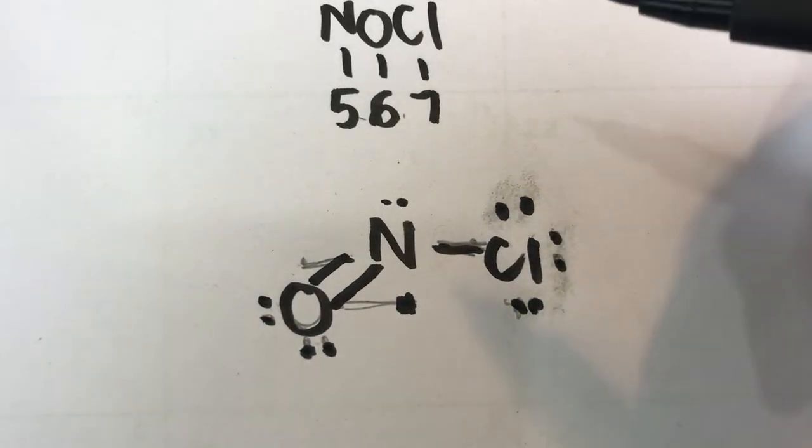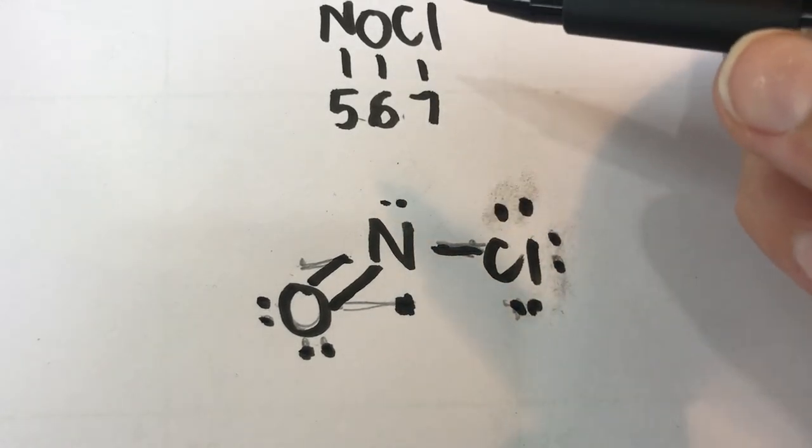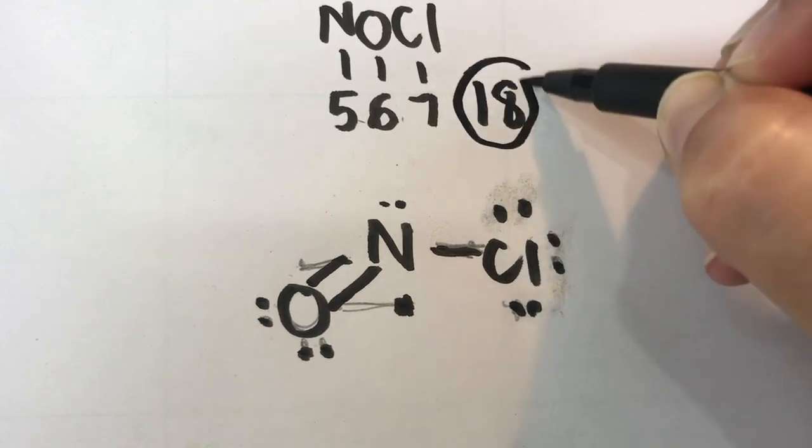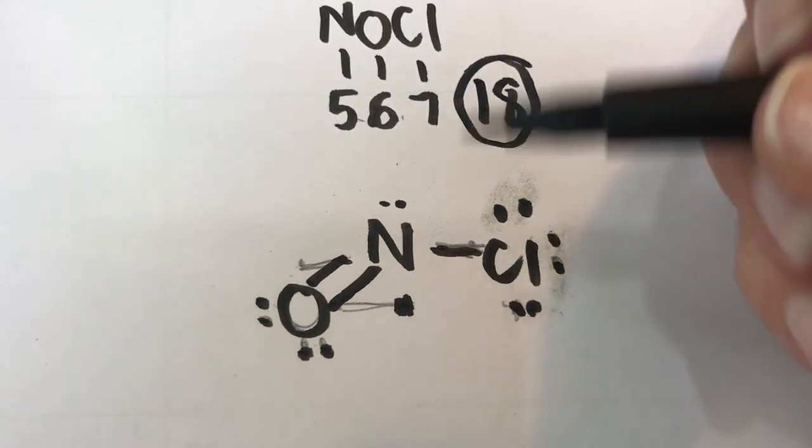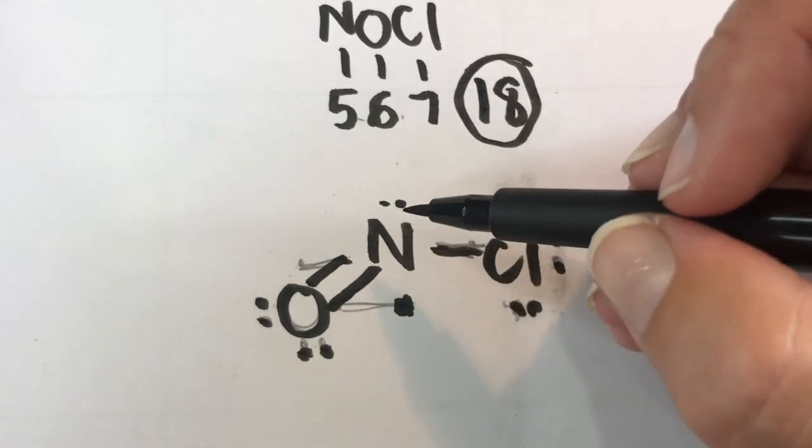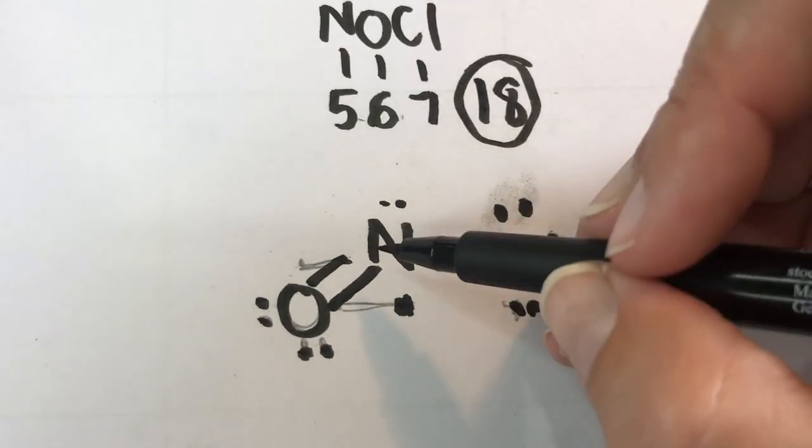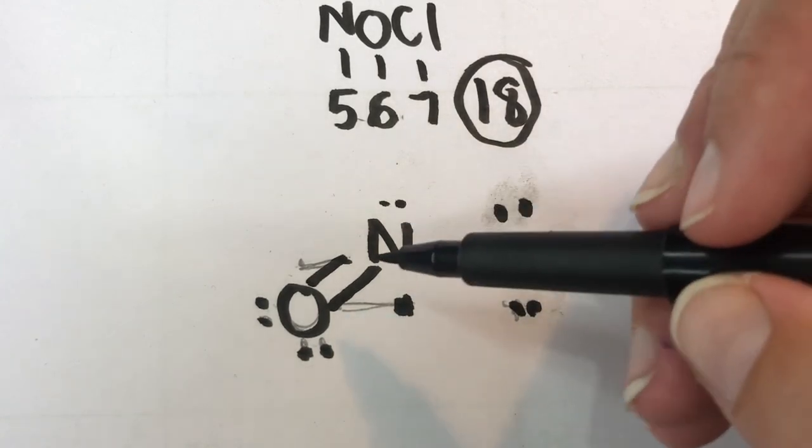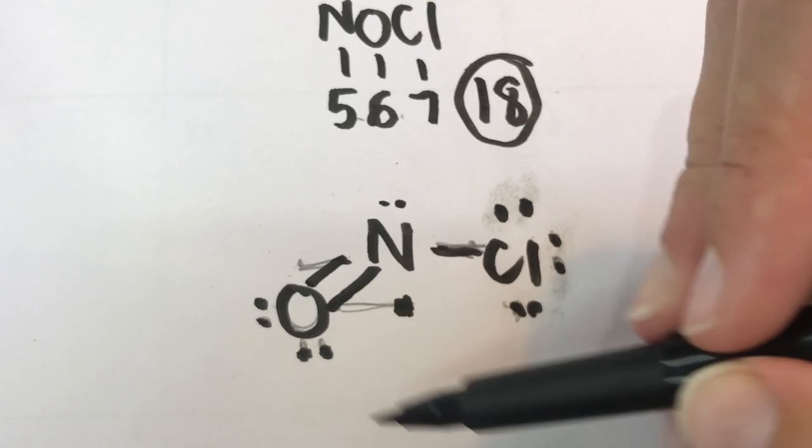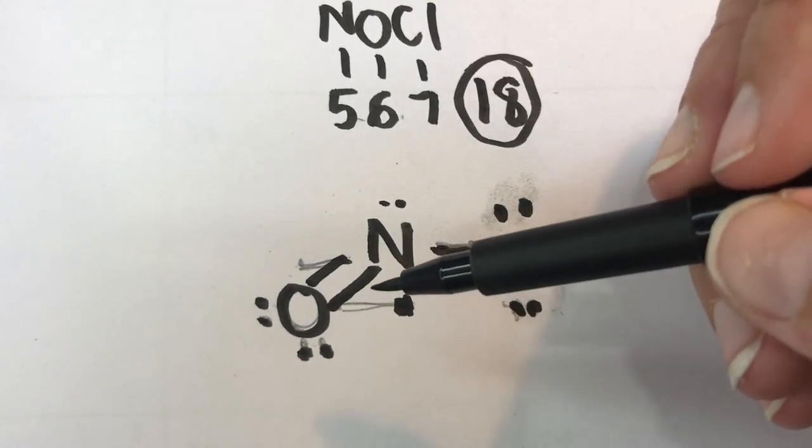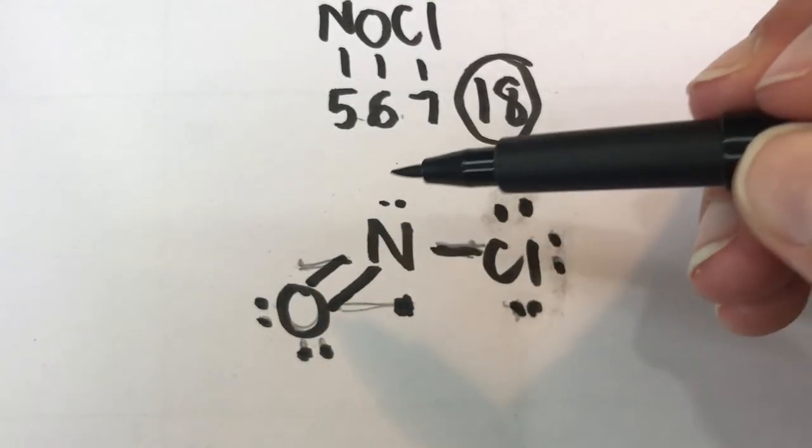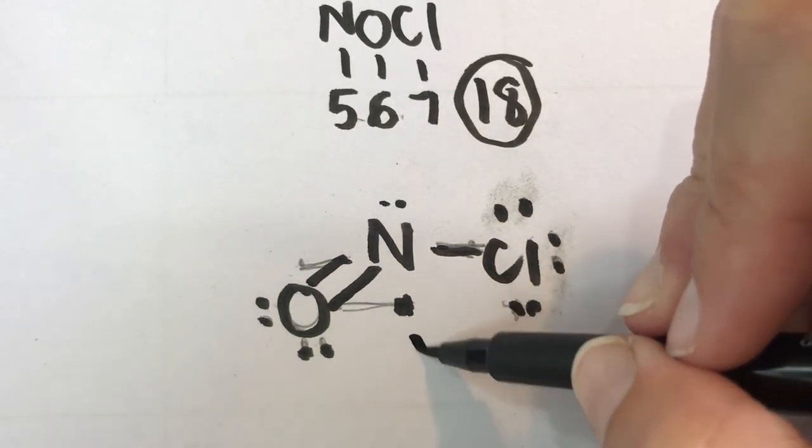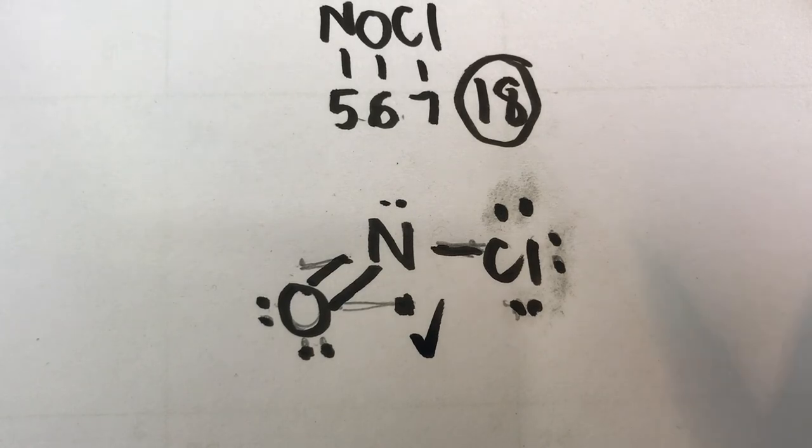And I'm confident that this is correct, but if you weren't confident then you would just count up your electrons. So in total we should have 18 and each should have 8 electrons around it so that it's stable. So we've got 2, 4, 6, 8 around chlorine; 2, 4, 6, 8 around nitrogen; 2, 4, 6, 8 around oxygen. So each has 8, and in total we've got 2, 4, 6, 8, 10, 12, 14, 16, 18. So we know that this is the correct Lewis diagram for NOCl.